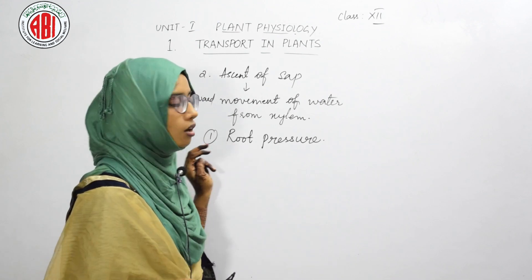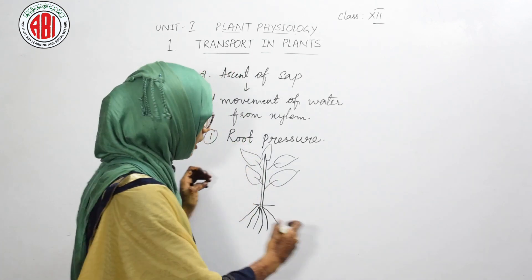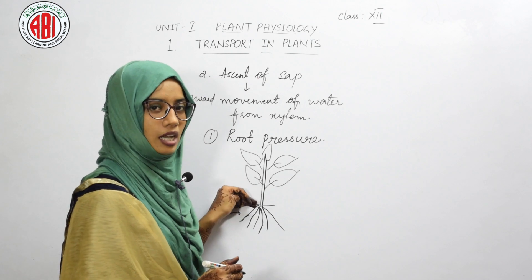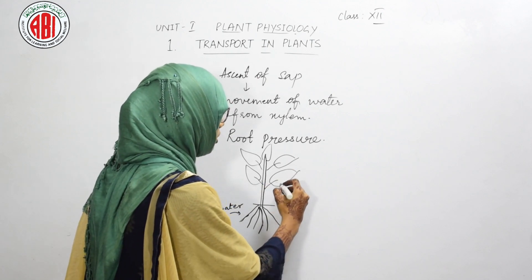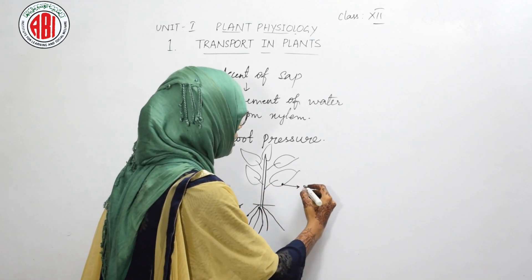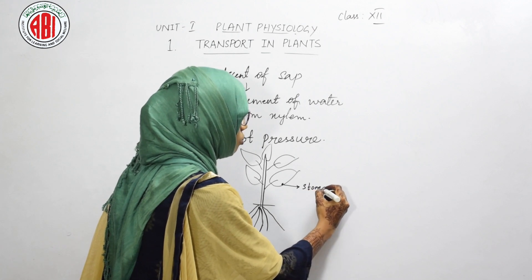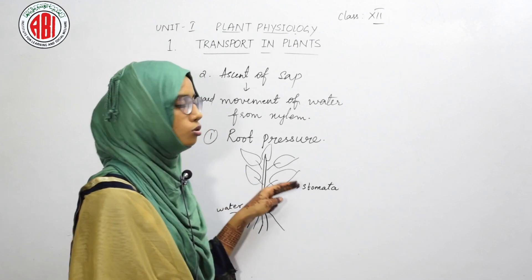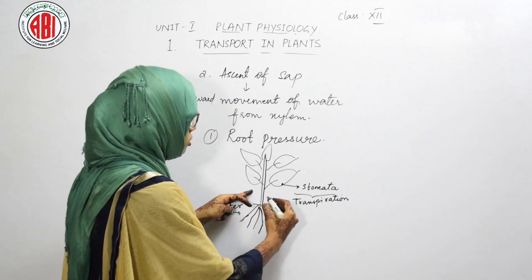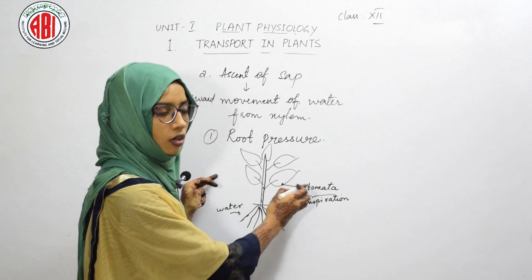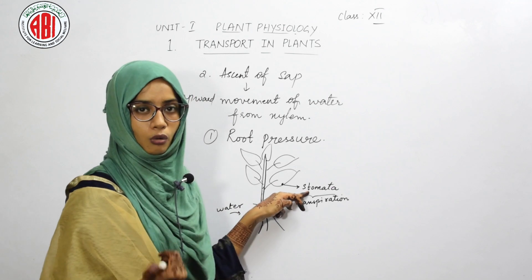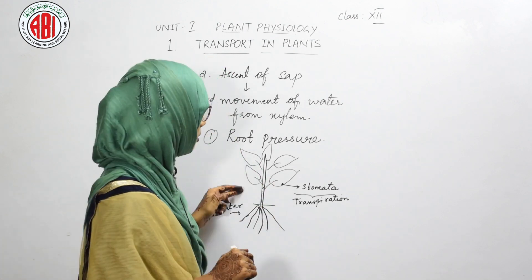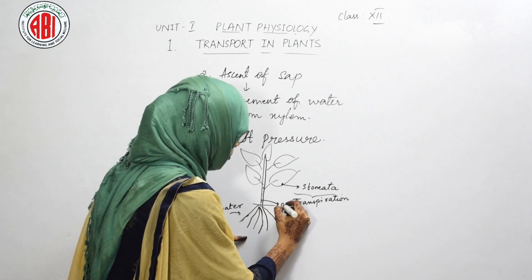Root pressure must be created to transport water from the xylem vessels to the leaves. The root absorbs water from the soil, which reaches the xylem vessels of the root, then enters the stem and reaches the leaves. In the epidermal layer of the leaves there are tiny pores called stomata, which help in water loss. Water loss through stomata is called transpiration. This inward movement of water and water loss is continuous, but when stomata close during night time, transpiration stops while the inward water movement continues.